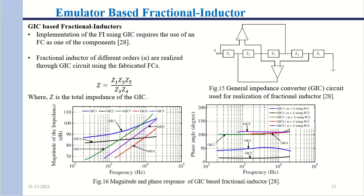For emulator-based fractional inductors, a general impedance converter (GIC) is used to emulate a fractional inductor using a fractional capacitor. As shown in figure 15, the GIC impedance is given by Z = (Z1·Z3·Z5) / (Z2·Z4). By replacing Z2 or Z4 with a fractional capacitor (1 / C·s^α), the term C·s^α moves to the numerator, making the GIC behave as a fractional inductor.